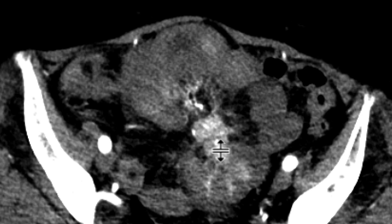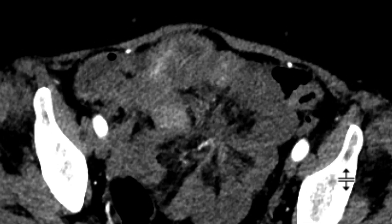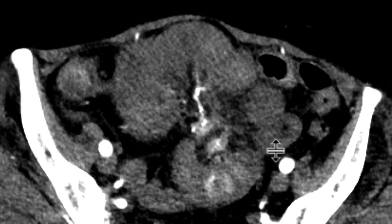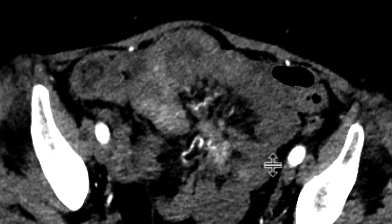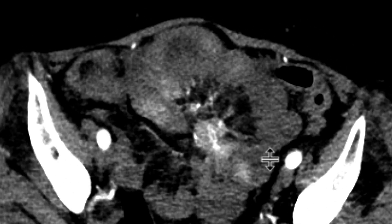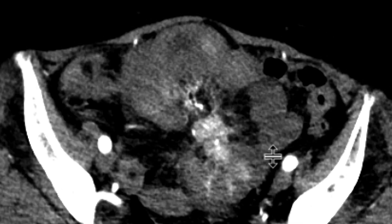Over here in the mesentery is the nodal metastasis from the carcinoid. It often results in tethering of multiple loops of small bowel, with spiculated margins and a few tiny calcifications associated with it, which we can see here. This is a great presentation of a carcinoid tumor of the small bowel with mesenteric nodal metastasis.